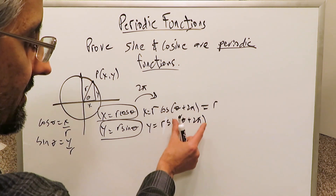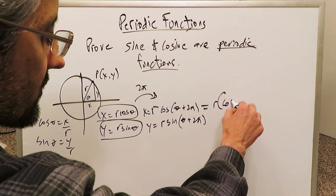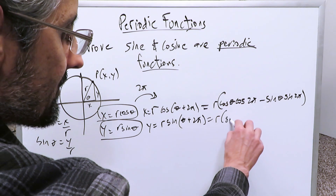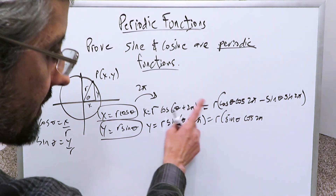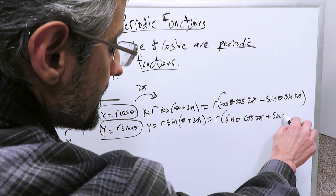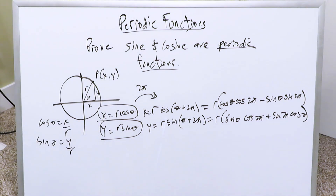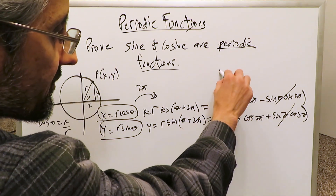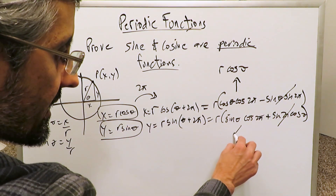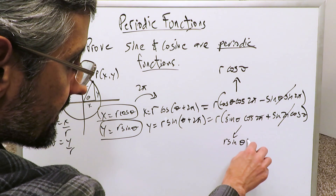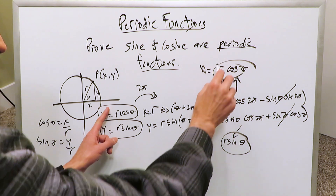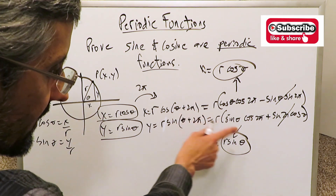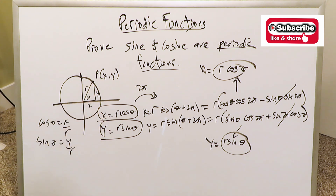Expanding using the sum formula: for x, you get r times (cosine θ · cosine 2π minus sine θ · sine 2π). For y, you get r times (sine θ · cosine 2π plus sine 2π · cosine θ). When you simplify, sine 2π is always zero, so those terms zero out. You're left with r·cosine θ for x — exactly what we started with — and r·sine θ for y, exactly what we need. Even with the addition of 2π, or 2πn with any integer n, the result is the same. I have shown that sine and cosine are periodic functions.